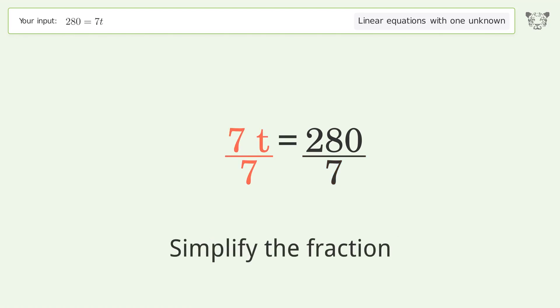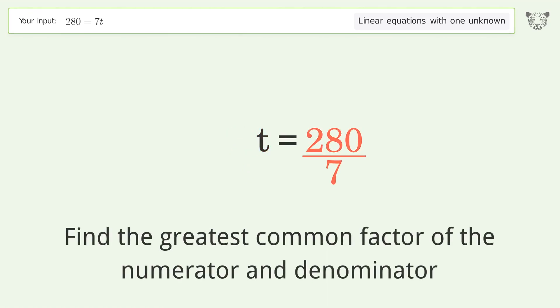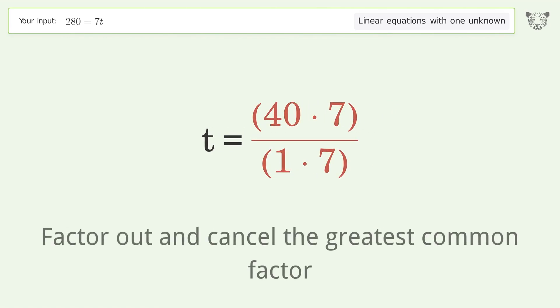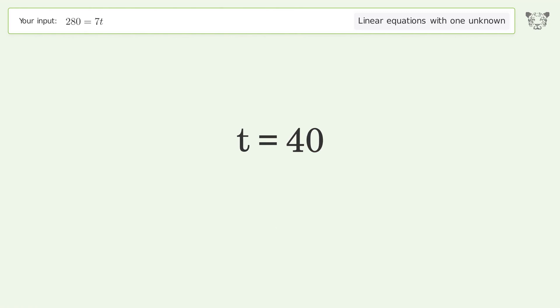Simplify the fraction by finding the greatest common factor of the numerator and denominator. Factor out and cancel the greatest common factor. And so the final result is t equals 40.